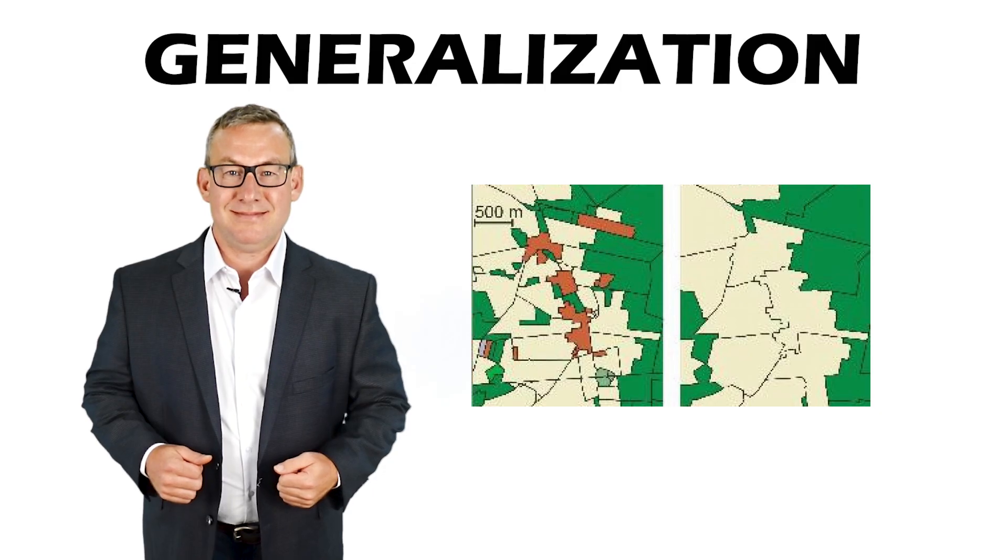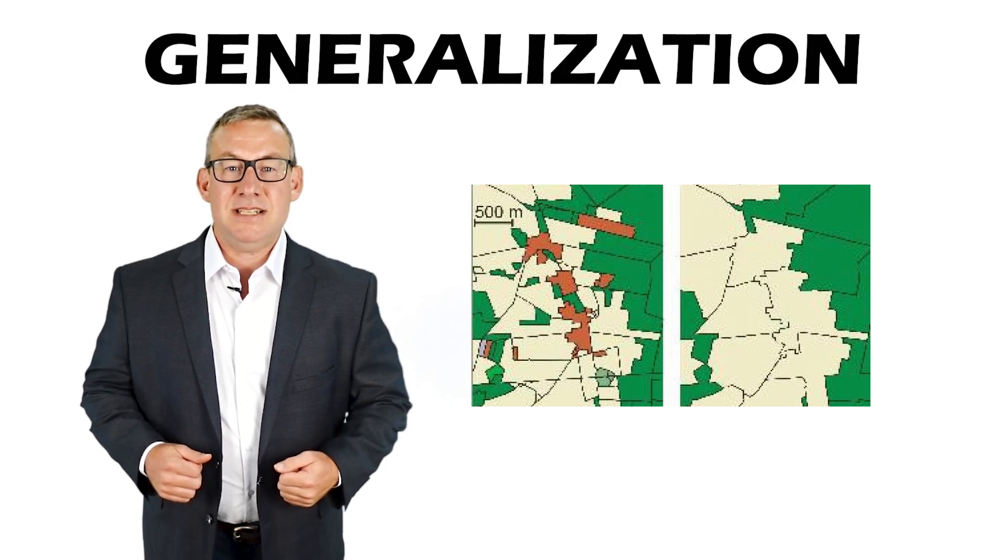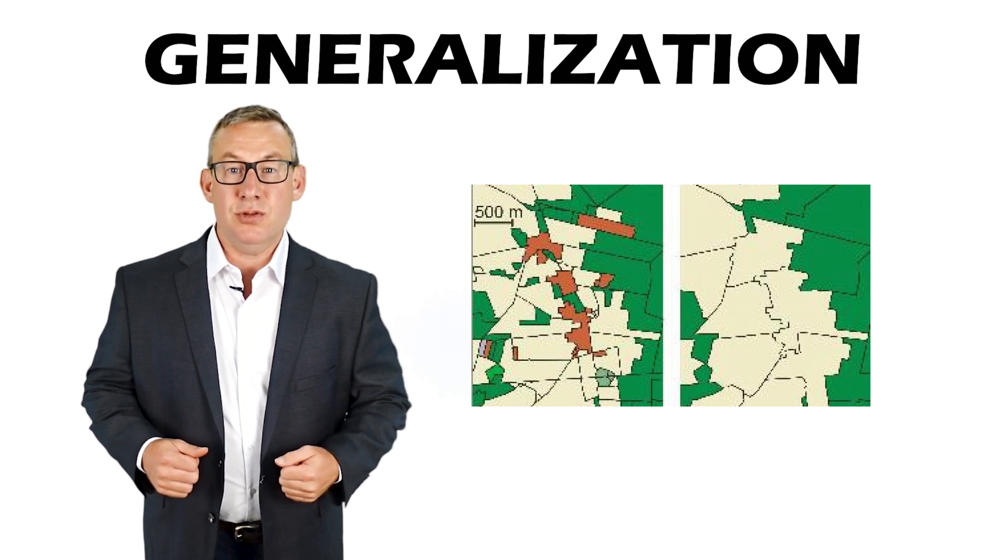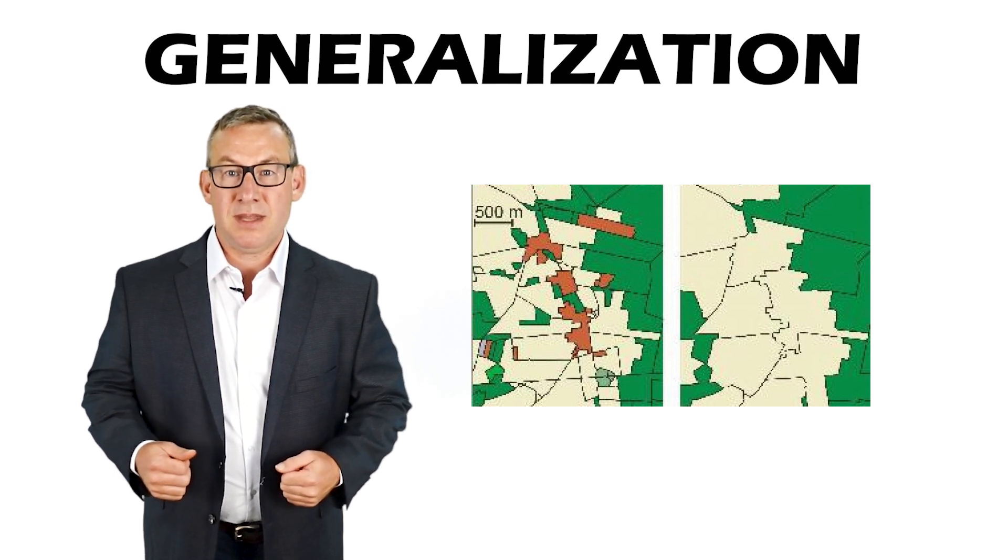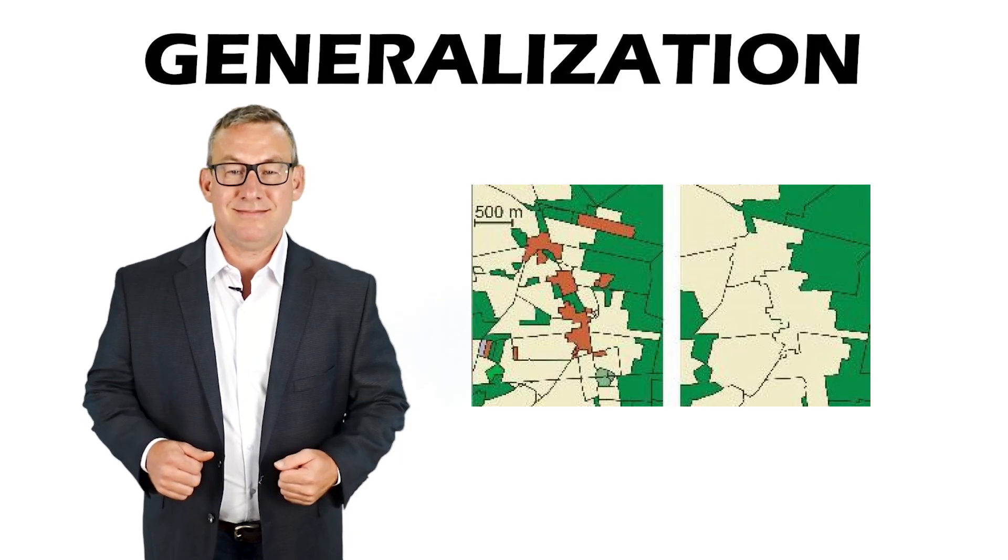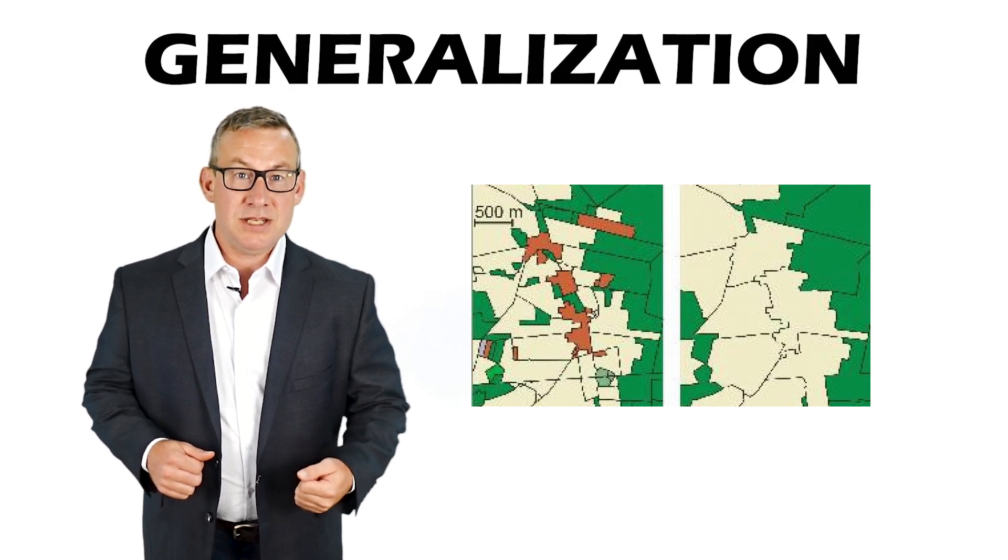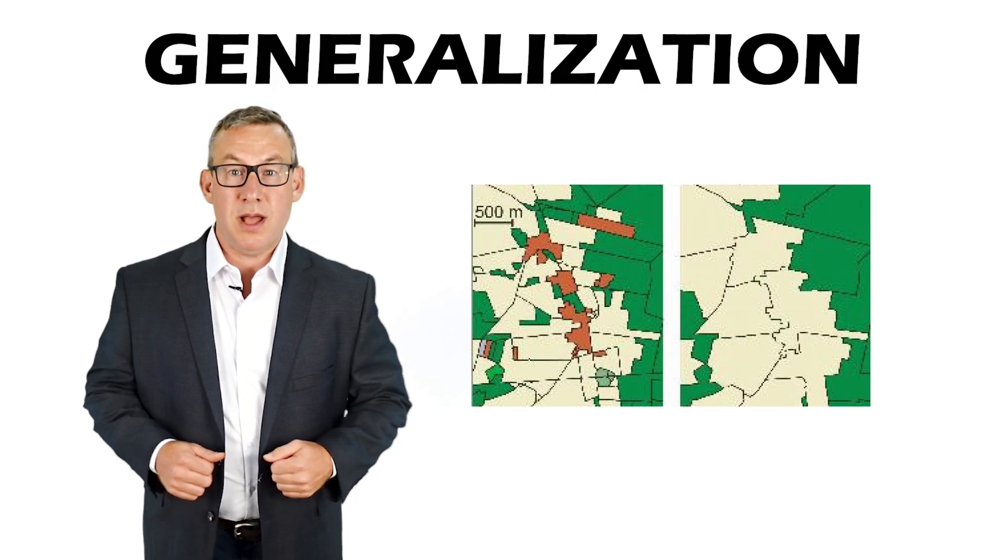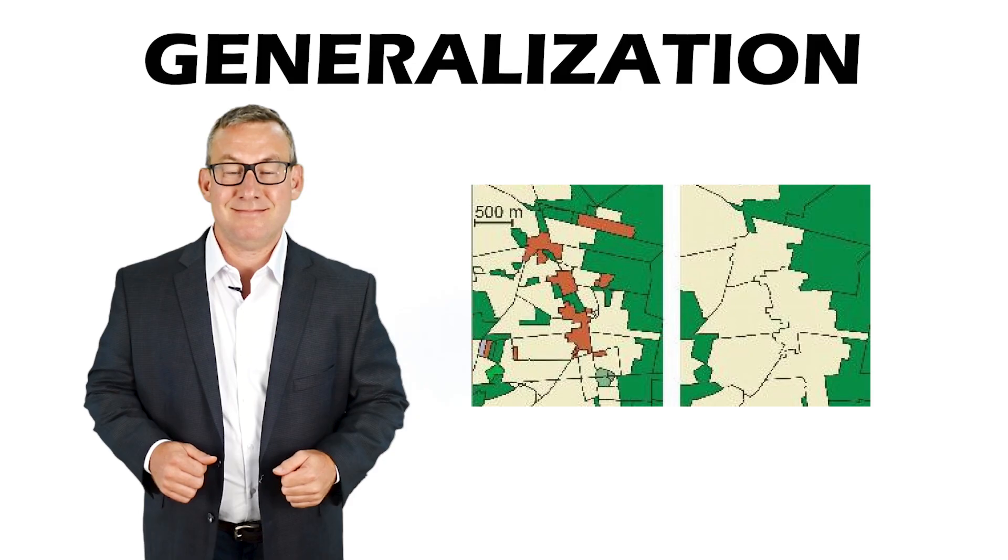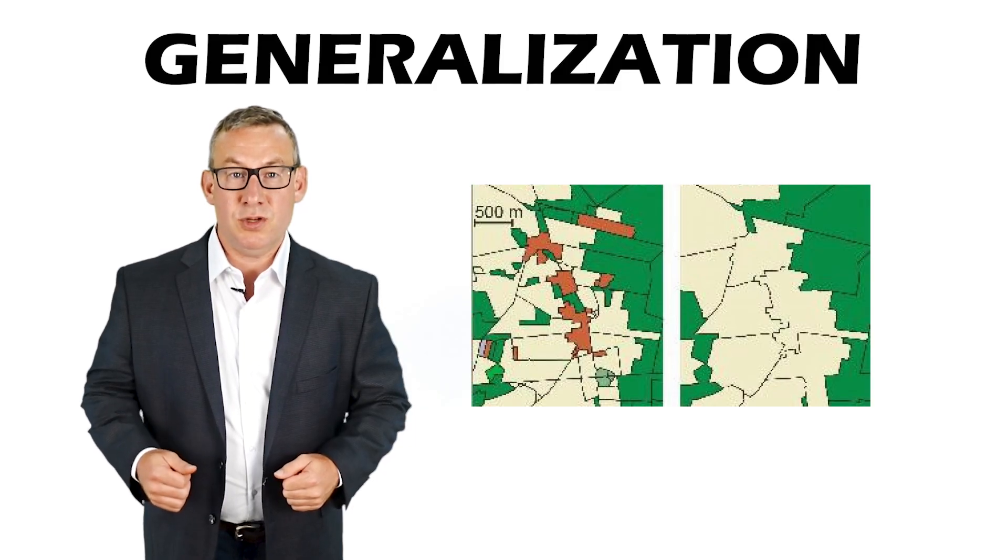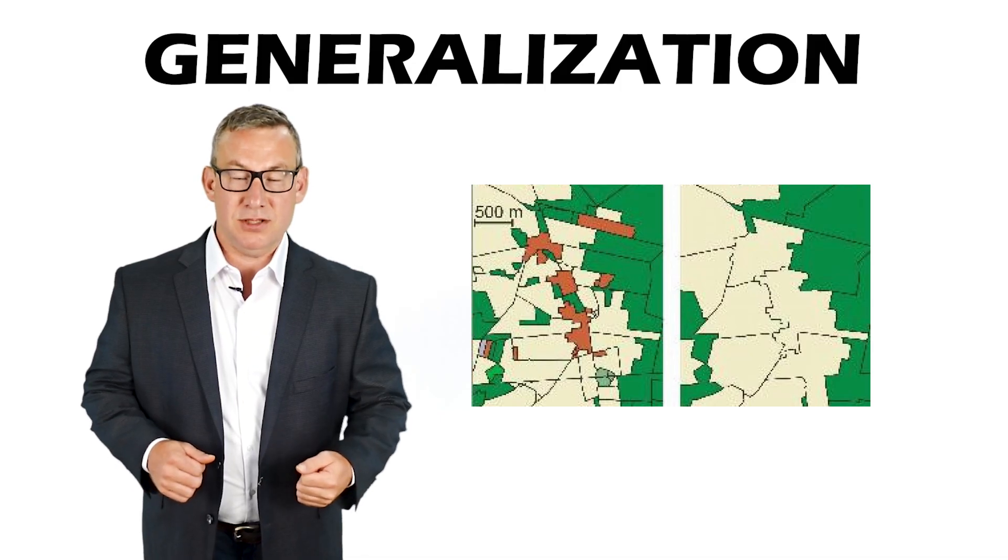Generalization reduces detail in data. It's used to declutter maps, increase map draw speed, and hide sensitive information. Generalization is needed on small-scale maps where there is not enough room to display all the features or details. Generalization reduces data accuracy and causes information loss.